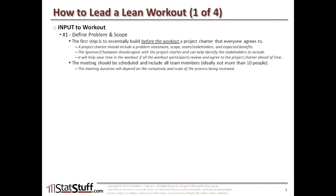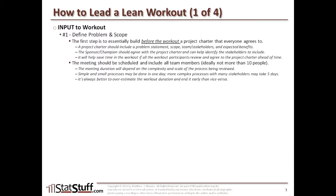The meeting duration depends on the complexity and scale of the process you're reviewing. If it's something simple or small, it may only be one day, but if you have something more complex with a lot of sub-processes or many stakeholders, then it may be better to plan for five days — generally the longest you'd want to plan. Worst case, if you're planning for five days, you may end up ending early, and everyone loves that. It's always better to overestimate the workout duration. Be sure that you've got the sponsor and champion's agreement and that they've dedicated all the resources necessary — the people or equipment needed throughout the duration of the workout.